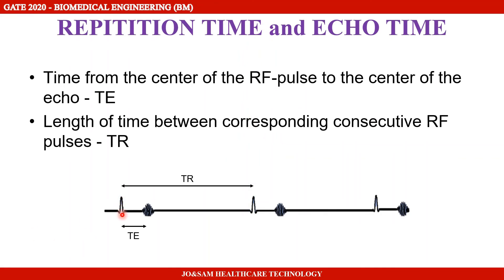The RF pulse is applied and then removed. The echo time (TE) is the time between the RF pulse and the measured signal echo. After that, another RF pulse is applied — that interval is called the repetition time (TR).